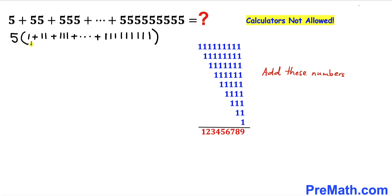Therefore I'm going to replace this whole series by this sum. So therefore I can write 5 times 1, 2, 3, 4, 5, 6, 7, 8 and 9.